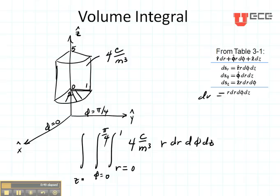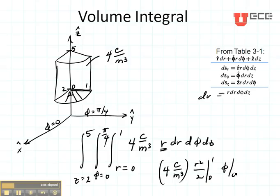And my Z term would go from this value right there which is two to this value which is five. And I would do this integral. Notice that the R, when we integrate that, we're going to get R squared over two from zero to one. Phi is just going to be phi from zero to four. And Z will be Z from two to five.